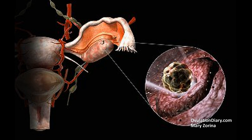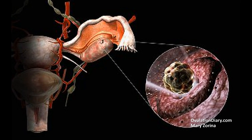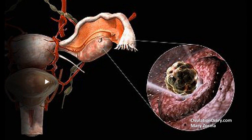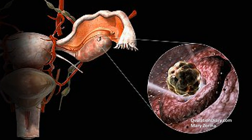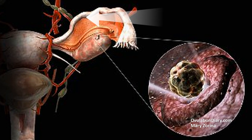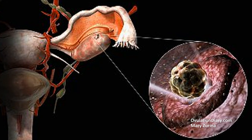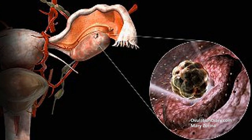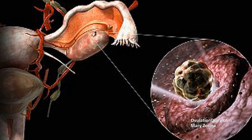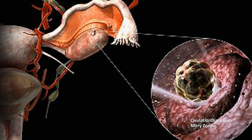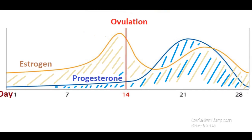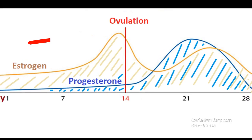Ovulation. Possible dates range from the 7th to the 30th day of the menstrual cycle. The dominant follicle matures, ruptures, and releases the egg. She moves towards the uterus, beginning the most favorable period for fertilization, lasting 24 hours. Here you can see ovulation — the release of the egg from the follicle. About 6 to 48 hours before ovulation, a powerful release of luteinizing hormone (LH) and estrogen occurs.